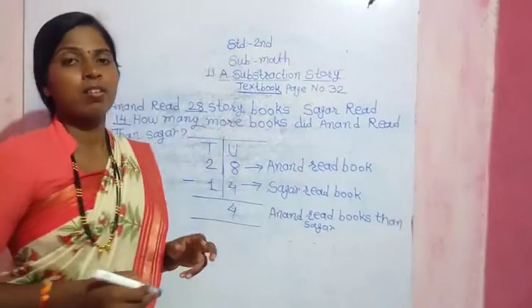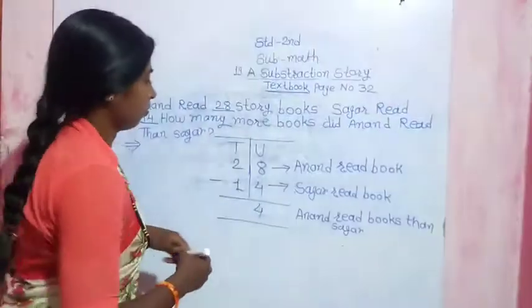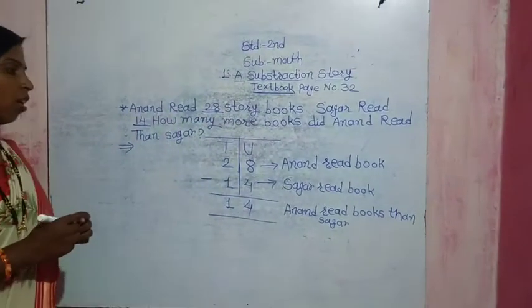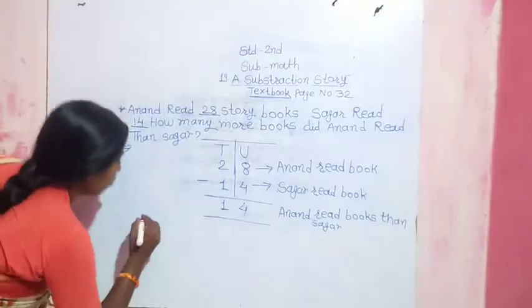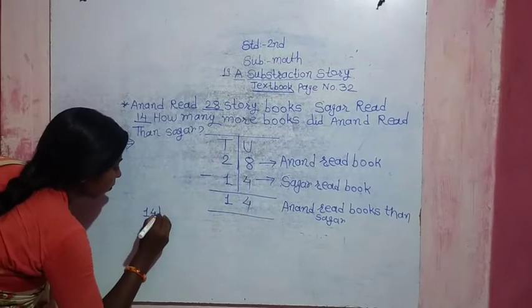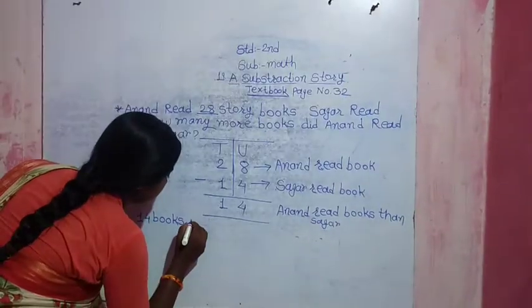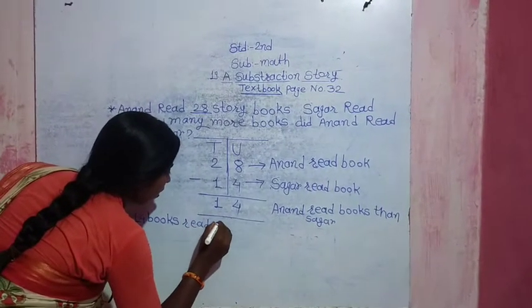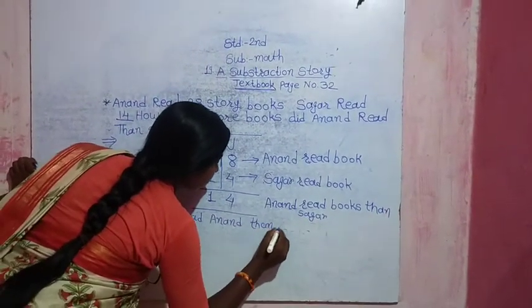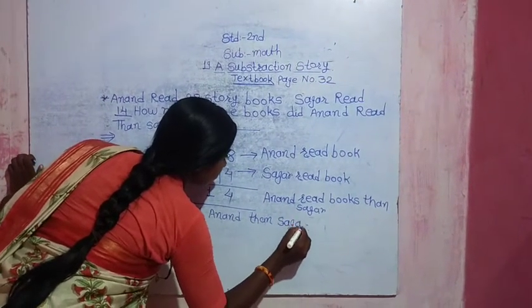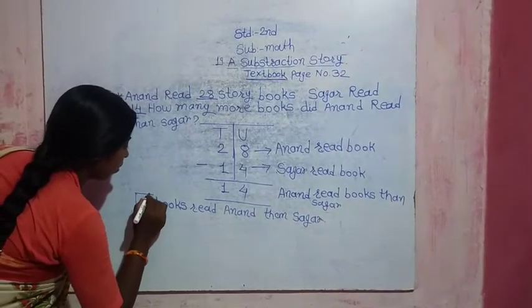To subtract 1, to subtract 1, I will get the answer 1. Anand read more books than Sagar. Anand read books then Sagar — 14 books.